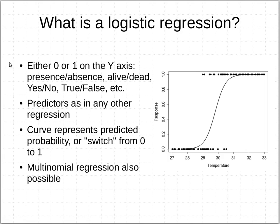A logistic regression is where you have either ones or zeros on the y-axis. In ecological contexts, those might be presence and absence of a species in locations, perhaps whether plants are alive or dead at a certain time of the year. Yes, no kind of data on surveys, true, false kinds of outcomes in models.